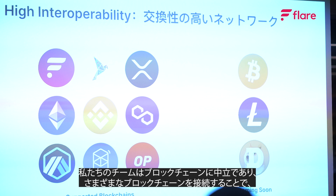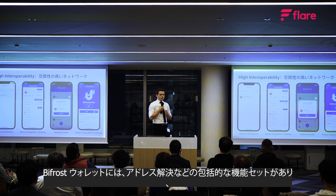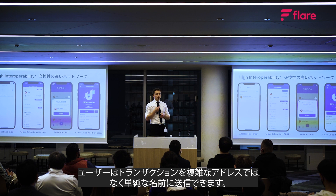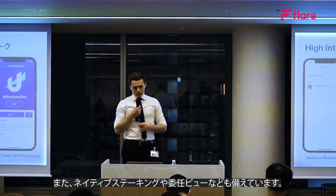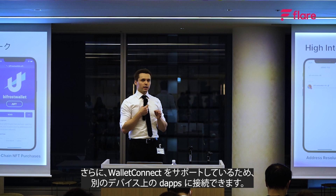Our team is blockchain neutral and we believe more value and a better user experience can be provided by connecting different blockchains. Bifrost Wallet has a comprehensive set of features such as address resolution, allowing users to send transactions to a simple name instead of a complex address. It also features native staking and delegation views, and supports Wallet Connect, allowing you to connect your app to a dApp running on a separate device.